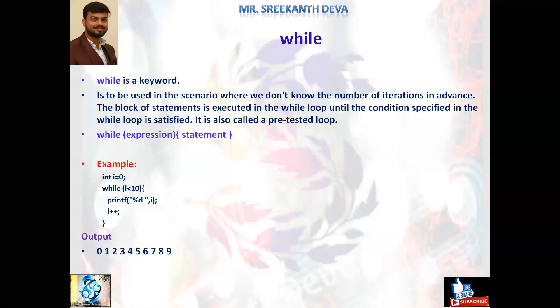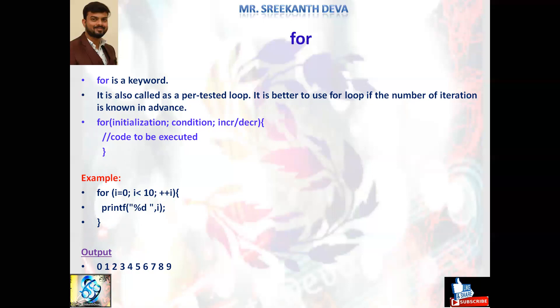The while, do, and for keywords are all used for loops or iterations in the C programming language.